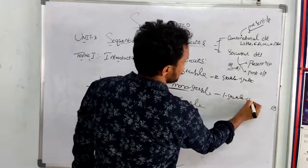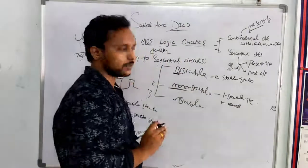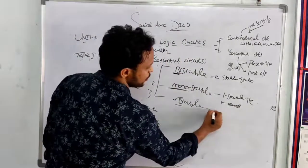Another one is quasi-stable. Quasi-stable means temporary stable state. A-stable – no stable state.